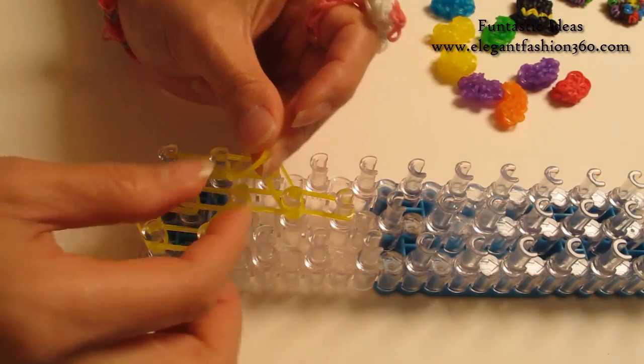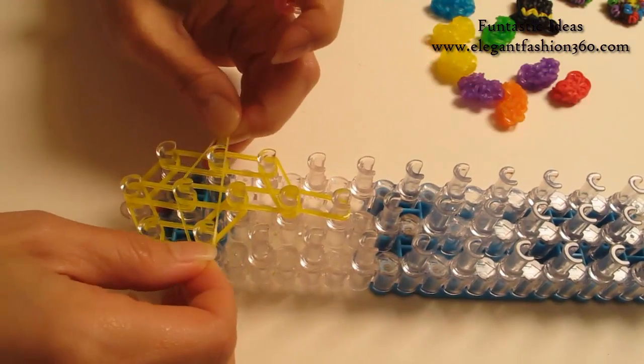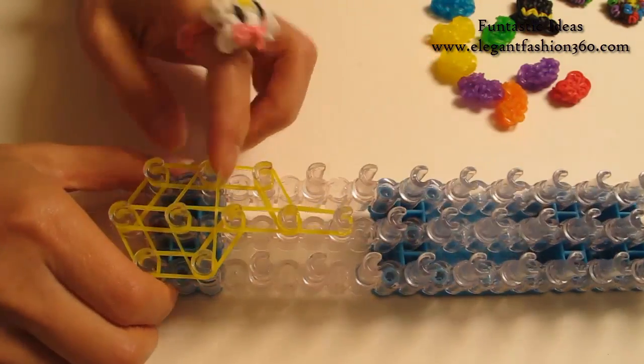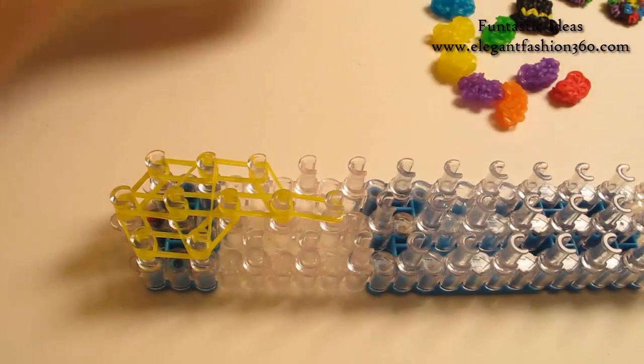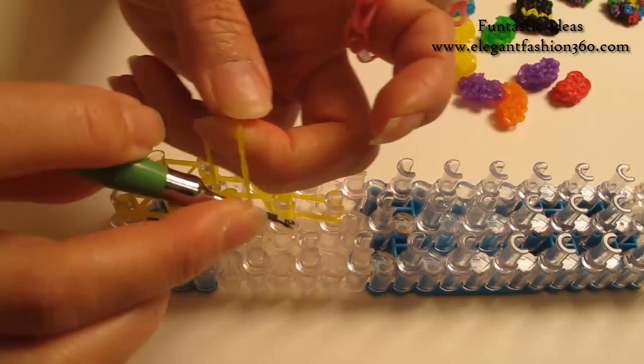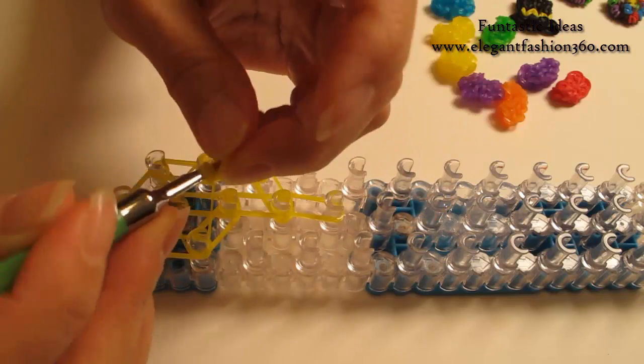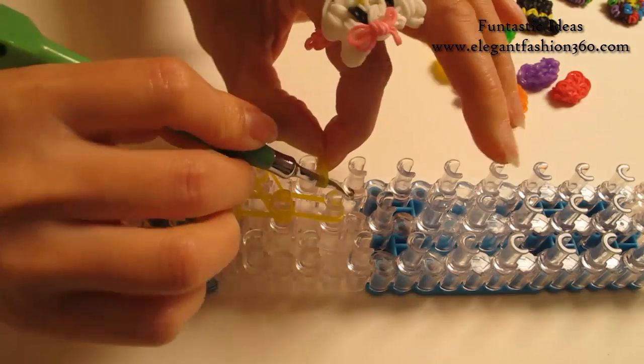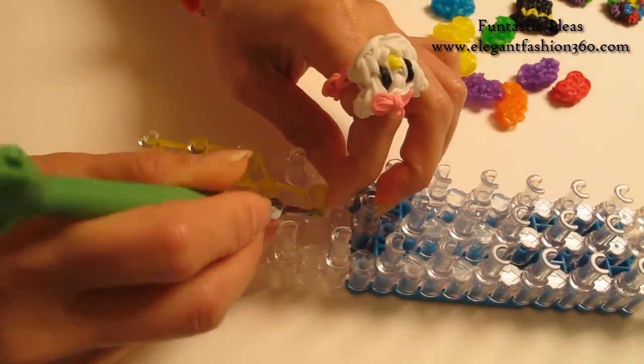Now we're going to take one single band, place right here, make an upside down triangle. And take one single band, twist one, two. So you will see three rings here, place right here as a cap band.